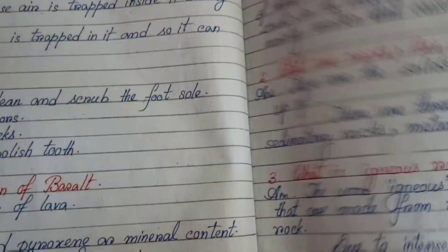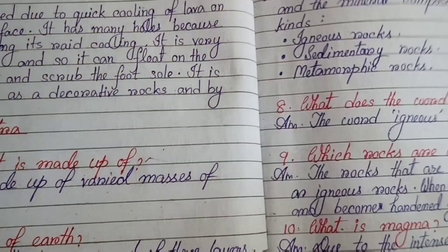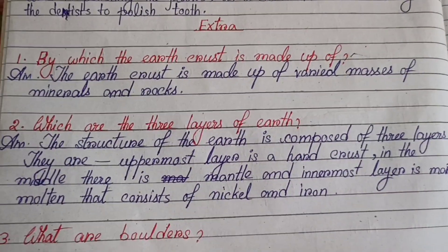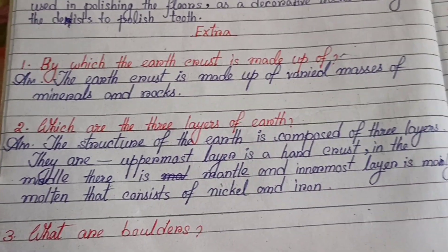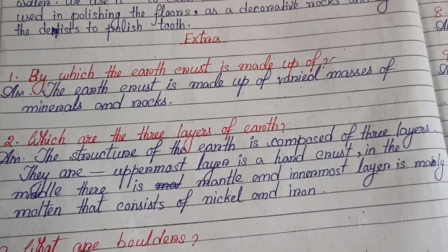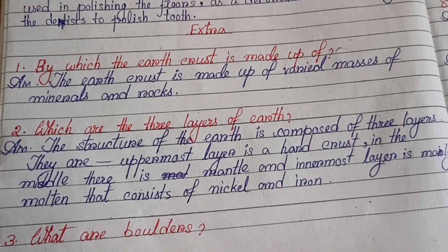Now it's time to solve the inside question answers. By which materials is the Earth's crust made up of? The Earth's crust is made up of varied masses of minerals and rocks.